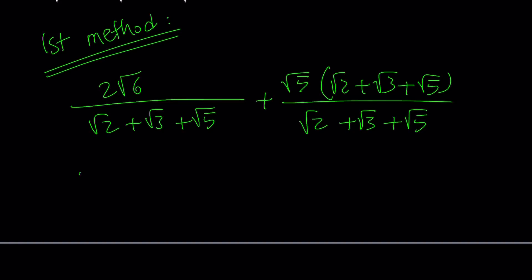We get 2 times root 6 plus, we're going to go ahead and distribute here, root 10 plus root 15 plus 5. And then that is going to be divided by root 2 plus root 3 plus root 5.